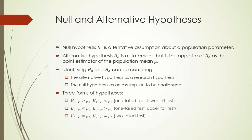First, let's understand the starting point of any hypothesis test: null hypotheses and alternative hypotheses. Null hypothesis is typically denoted by H0. This is a tentative assumption about a population parameter. In this chapter, the population parameter in question is the population mean or population proportion. For example, the average household size in Bay Area is 2.7.